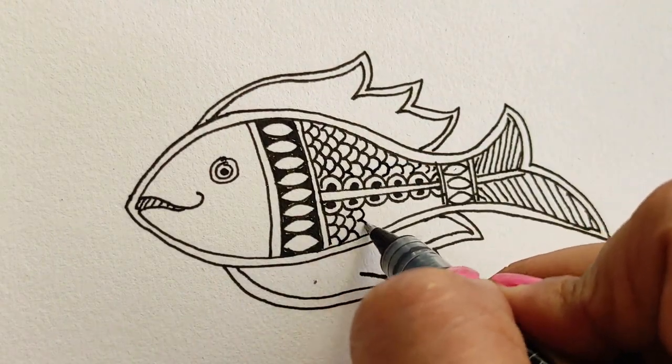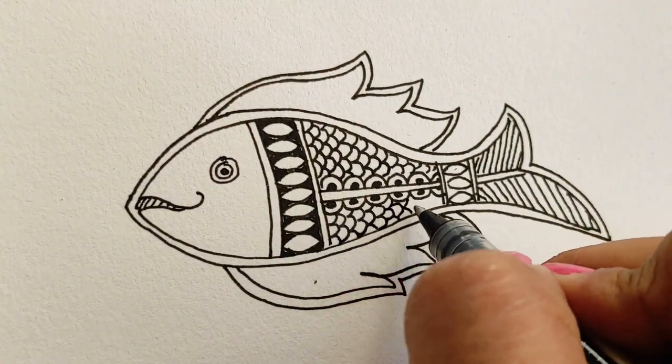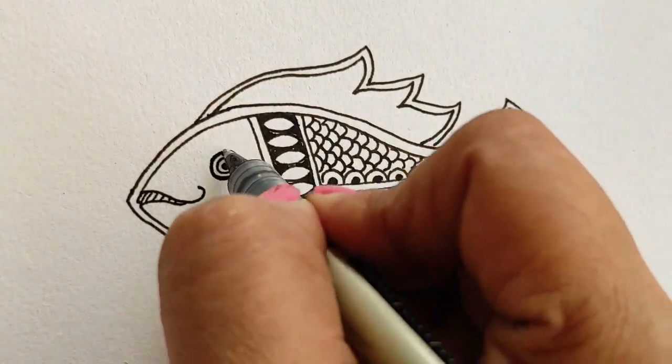So here these are my very tiny scales and now I'll go on to the fin and just do the dot pattern. This is my second fish.